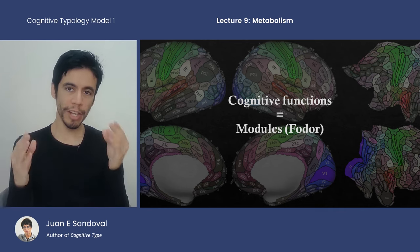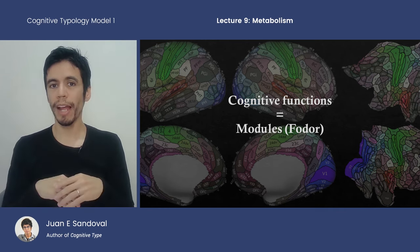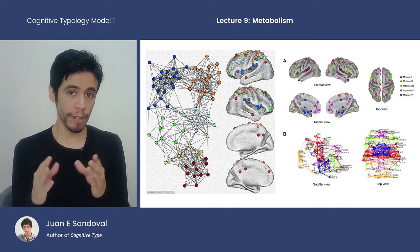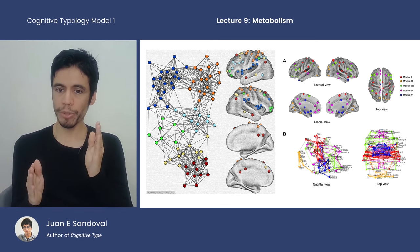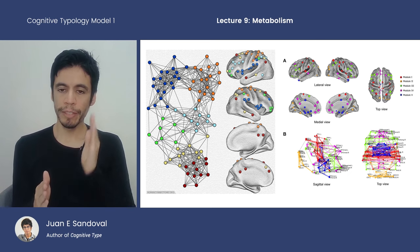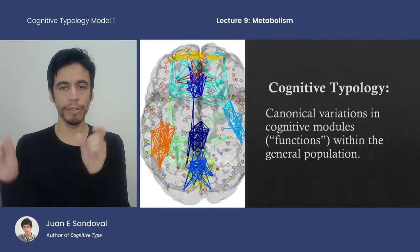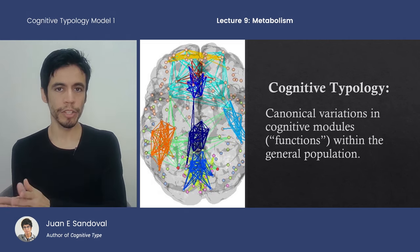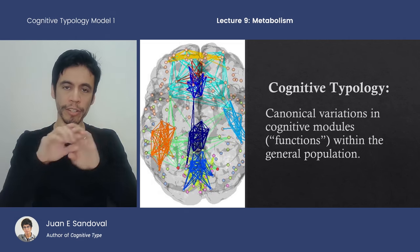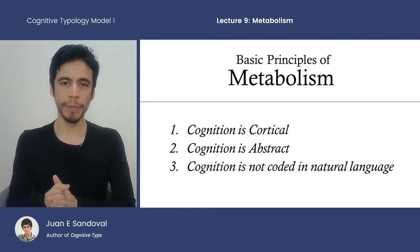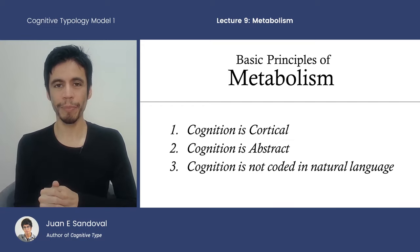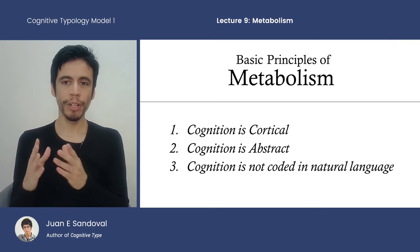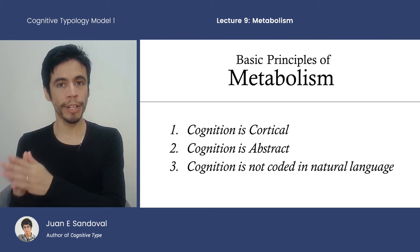The human mind has many modules of operation. Different parts of the brain do different things, and for the most part humans share most modules in common. But in some of those modules there's variation — for example, one of my modules might be different genetically from another person's, and that difference leads to a difference in overall experience. That's what CT means by cognitive typology: a typology created by the variations humans have in some of these modules. Before describing the metabolism of the eight functions, there are three main things to keep in mind: cognition is cortical, cognition is abstract, and cognition is not coded in natural language.